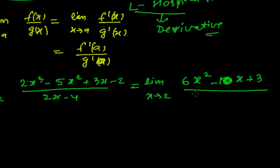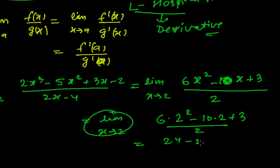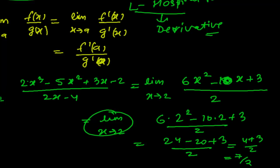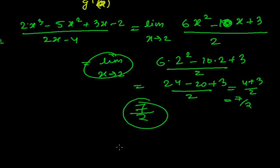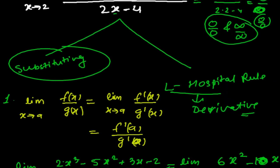So the derivative of the numerator is 6x² - 10x + 3, and the derivative of the denominator (2x - 4) is 2. Now we can plug in x = 2: we get 6 times 2² minus 10 times 2 plus 3, divided by 2. That gives 6 times 4 = 24, minus 20, plus 3, over 2 — which is 24 - 20 = 4, plus 3 = 7, divided by 2. So the answer is 7/2.